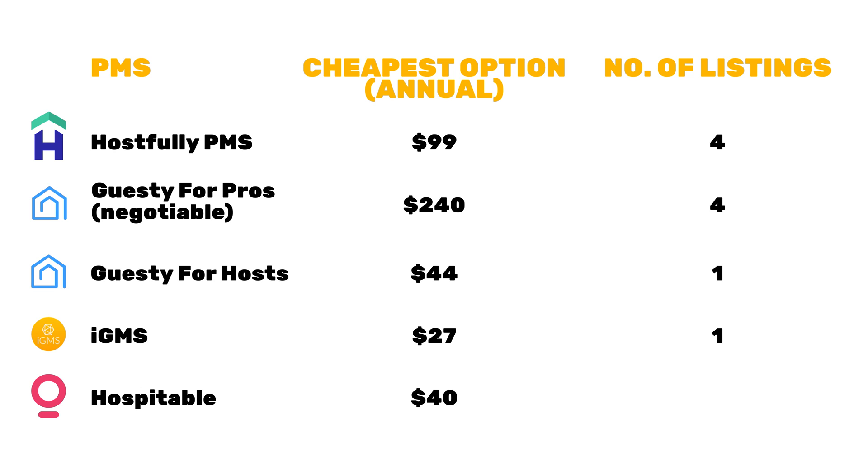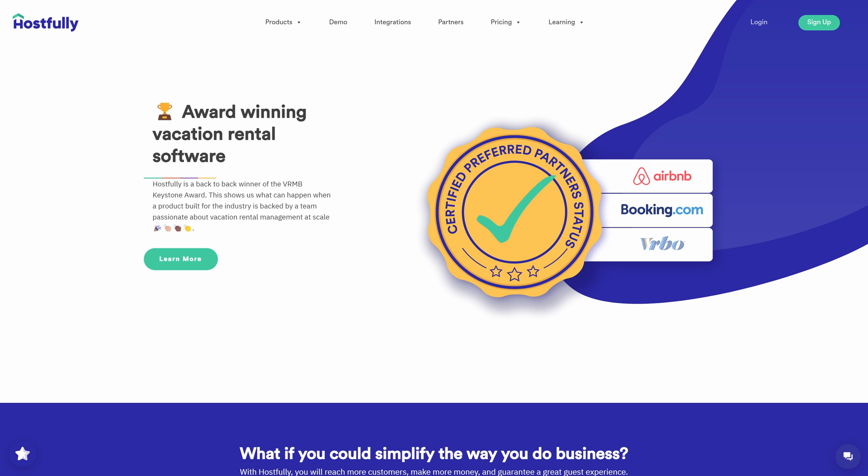Hospitable is $40 for two listings. Hostfully is a preferred partner for Airbnb, but as far as I can tell it doesn't matter — there are other tools that aren't partners with Airbnb and there's no real friction going on. These companies do advertise preferred partner status but it doesn't really mean anything as far as I'm aware. If you disagree, I'd like to hear from you in the comments.